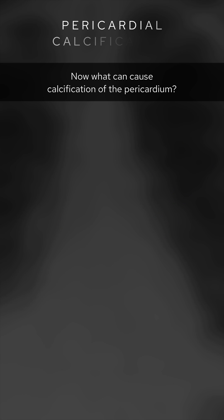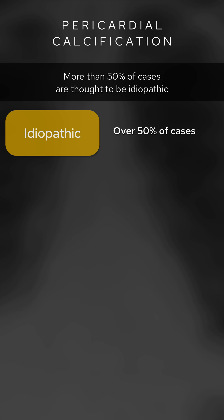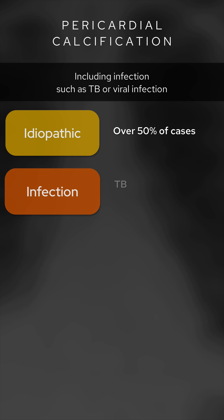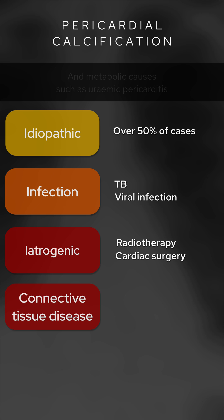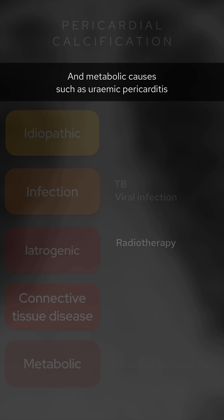Now what can cause calcification of the pericardium? Most causes are things that cause inflammation of the pericardium. More than 50% of cases are thought to be idiopathic. Otherwise, there are a range of causes, including infections such as TB or viral infection, iatrogenic causes including previous radiotherapy or cardiac surgery, connective tissue diseases, and metabolic causes such as uremic pericarditis.